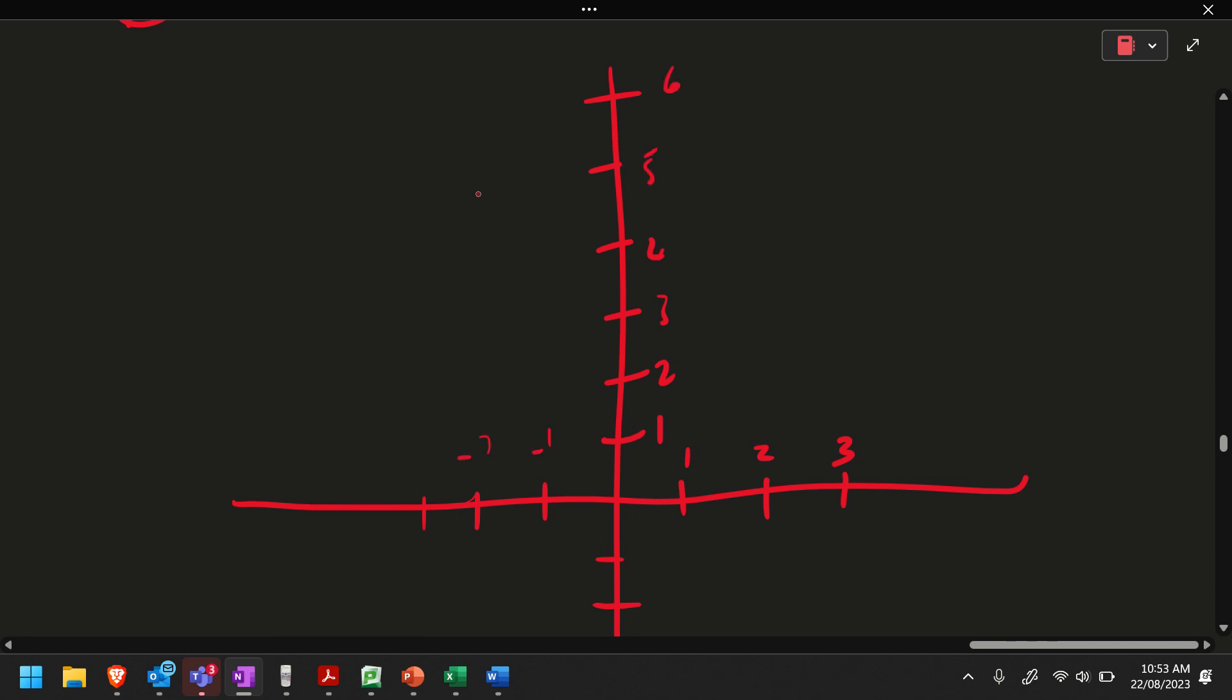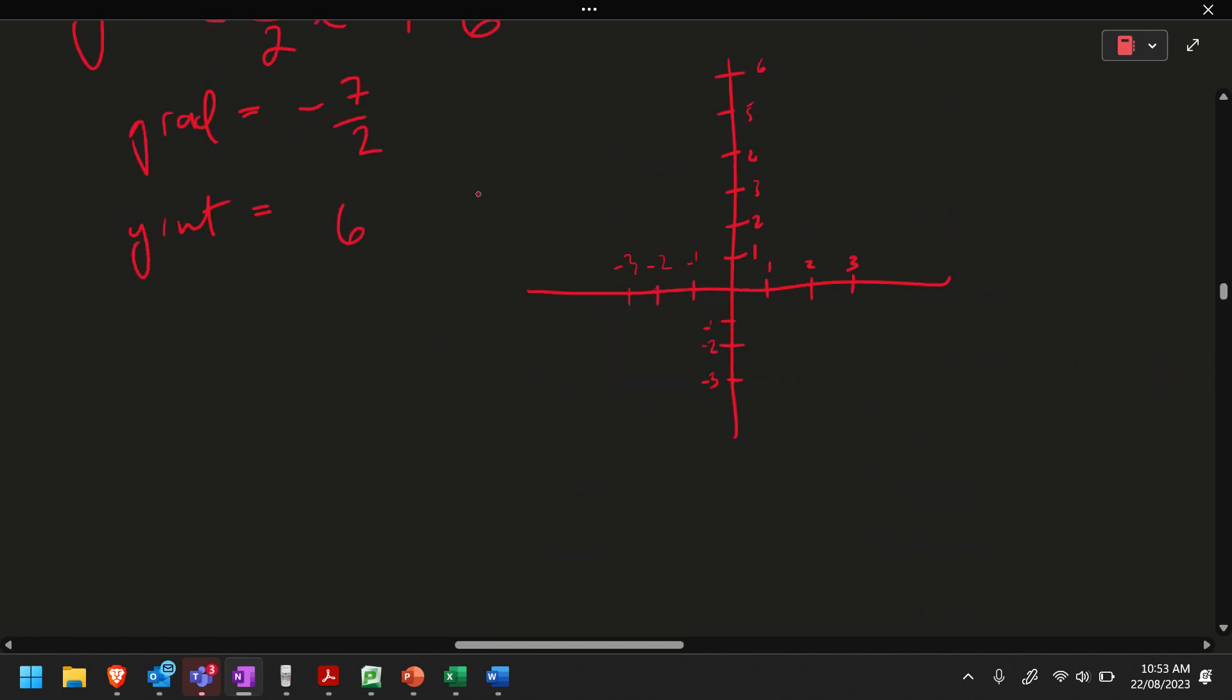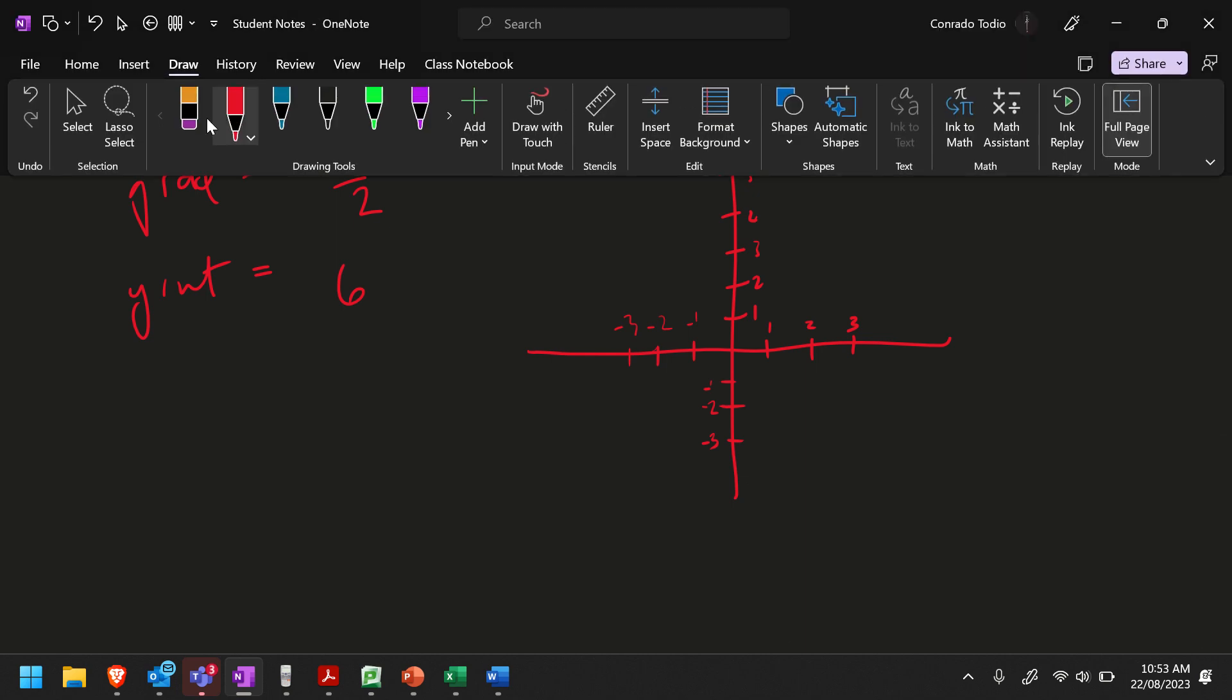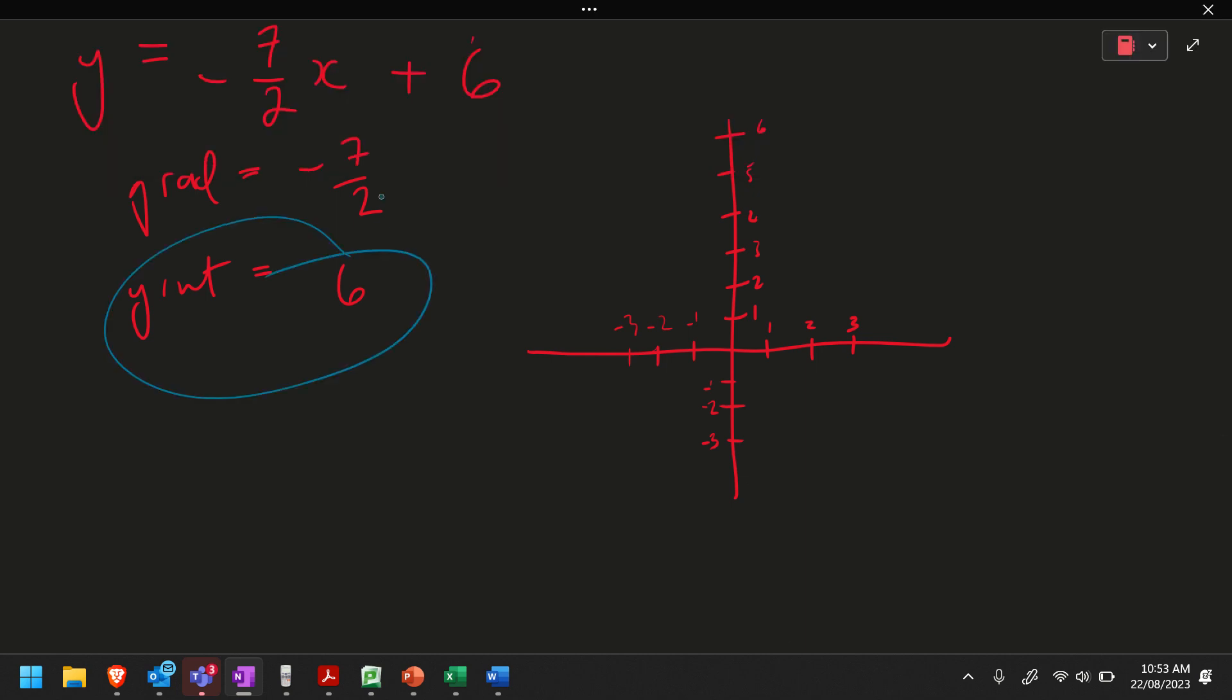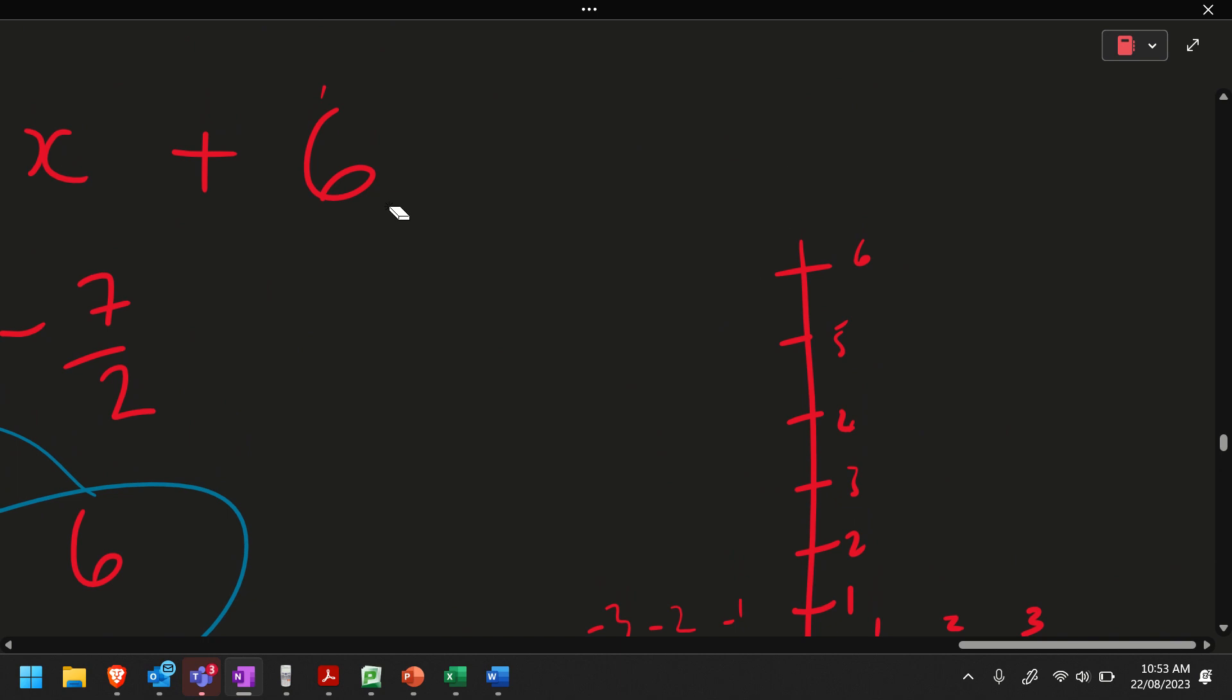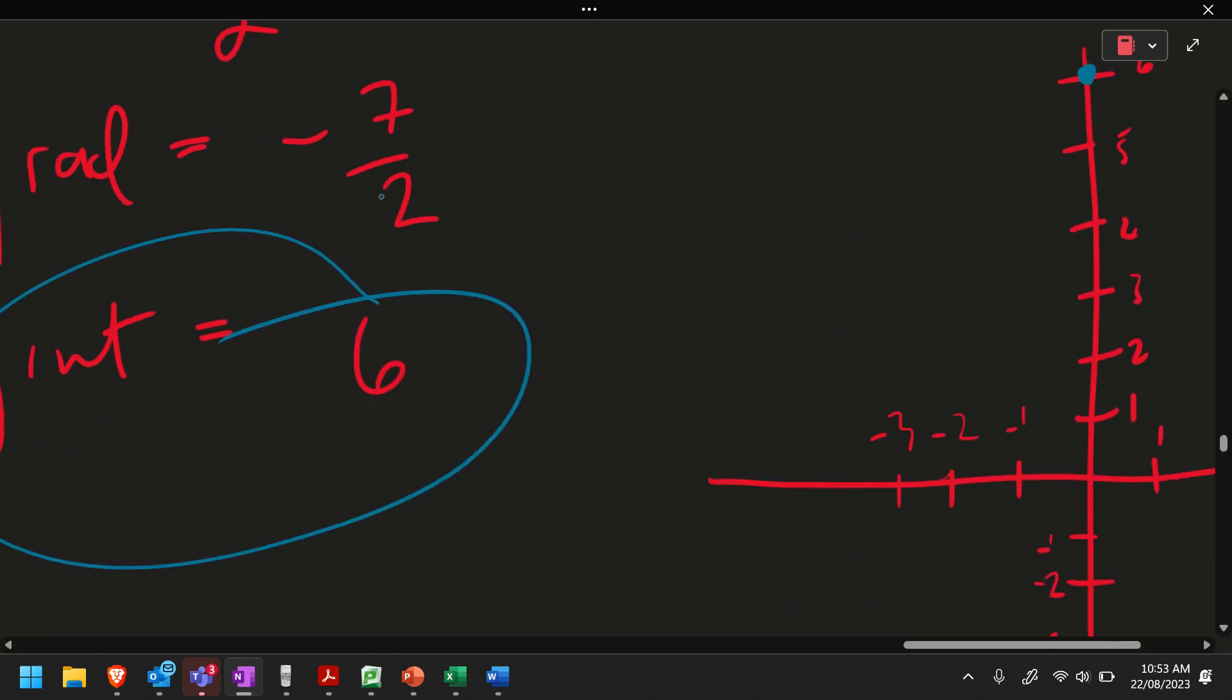Okay, negative 1, negative 2, negative 3. Negative 1, negative 2, negative 3. Now look at the question. The y-intercept is on 6 for the y-axis. So for my y-intercept, look for it in the y-axis. This is your y-axis, yeah? So it's on 6. That's the first one.